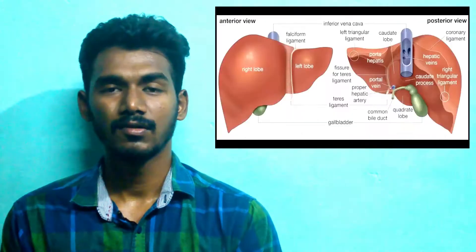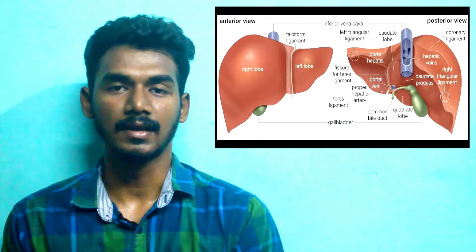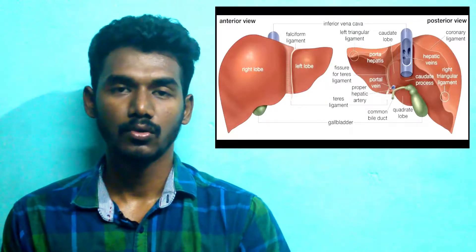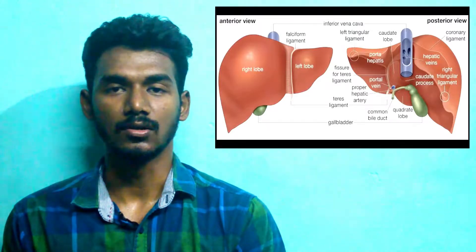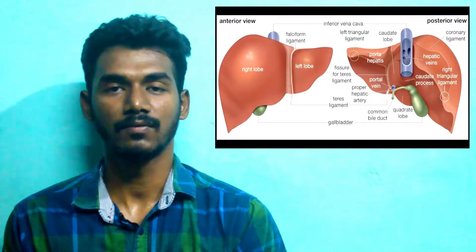The weight of the liver in males is 1.4 to 1.8 kg, and in females it is 1.2 to 1.4 kg. Approximately 1.5 kg on average.